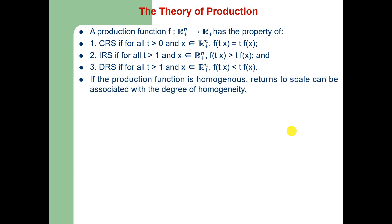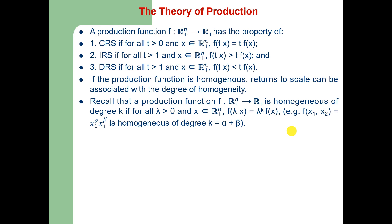If the production function is homogeneous, returns to scale can be associated with the degree of homogeneity. If the production function is homogeneous of degree k and λ > 0 and x is in the positive Euclidean space, then f(λx) = λ^k · f(x). For example, for a Cobb-Douglas production function x1^α · x2^β, it is homogeneous of degree k where k = α + β. If α + β = 1, there are constant returns to scale; if α + β < 1, there is decreasing returns to scale; and if α + β > 1, there are increasing returns to scale.